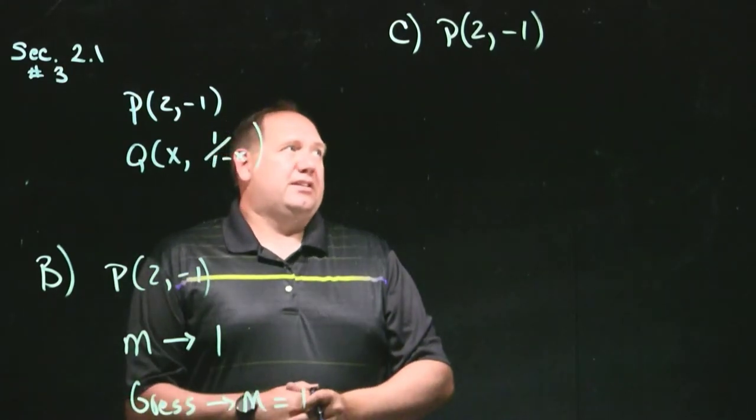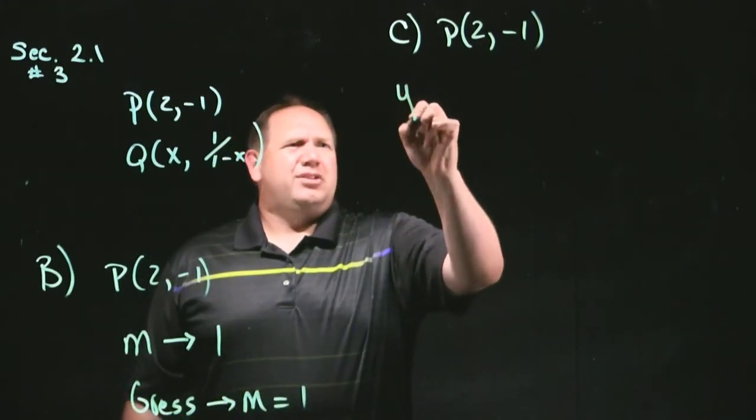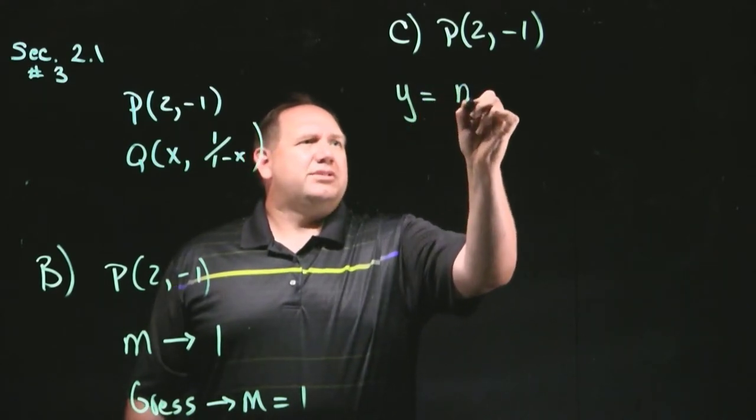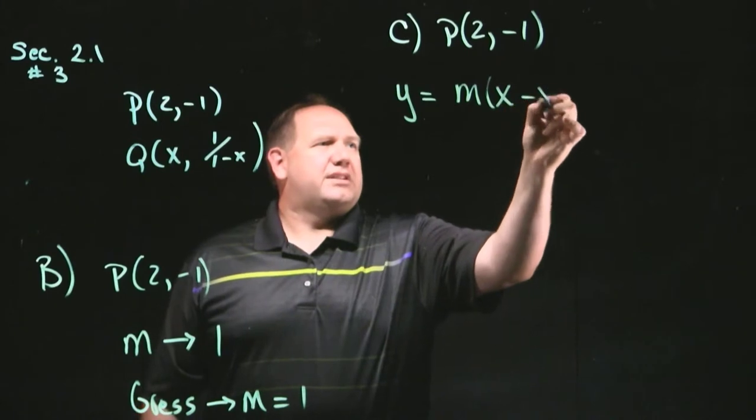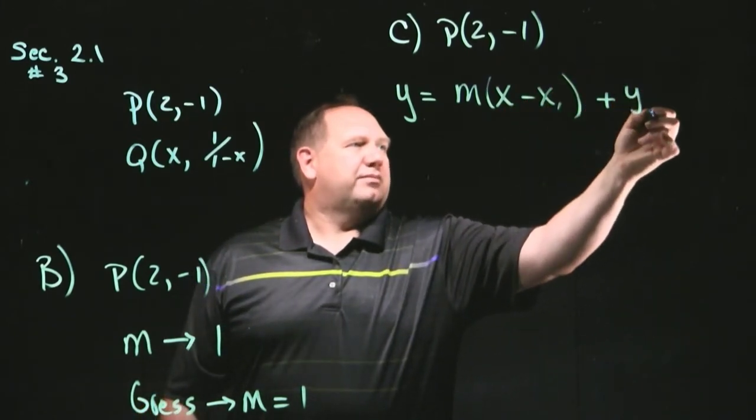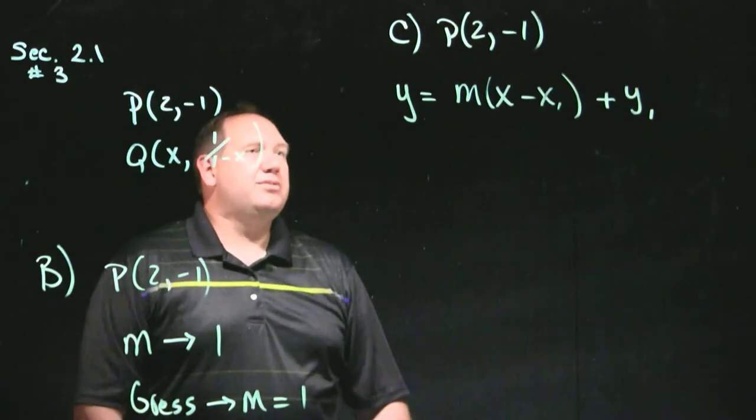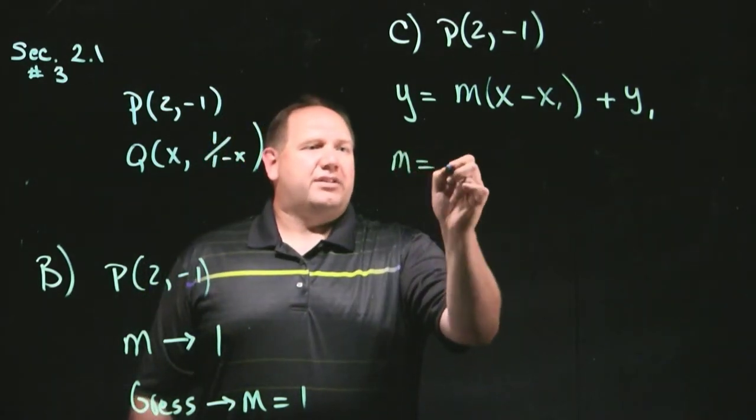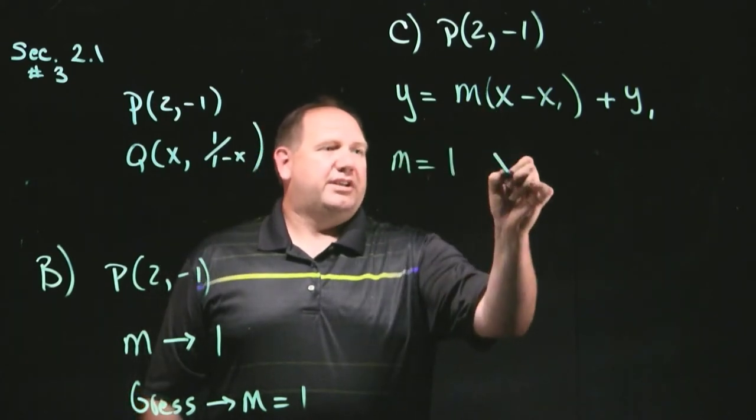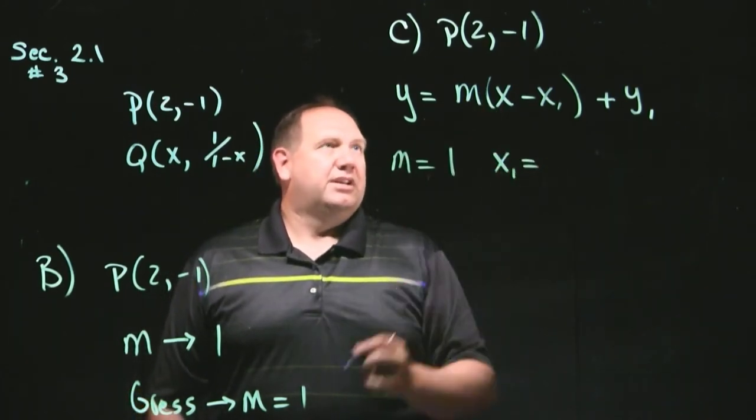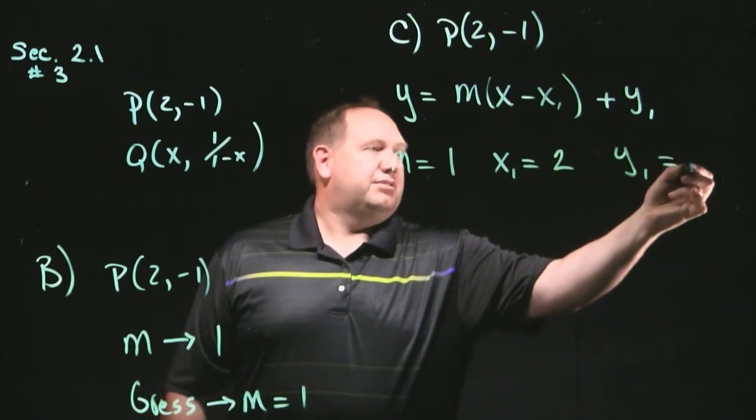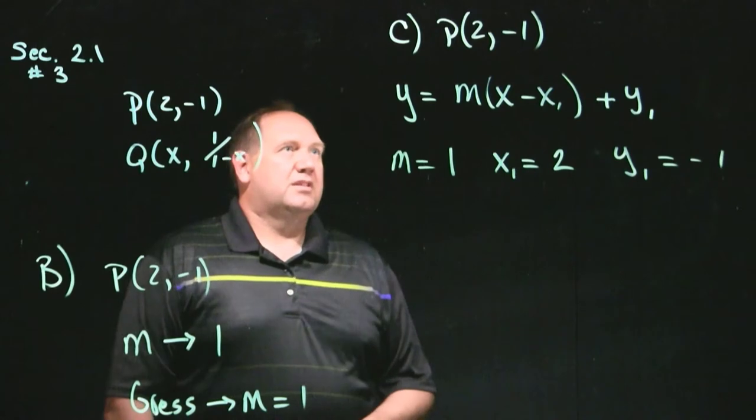Well, we have lots of ways to finding the equation of the line. I'm going to use y equals m times x minus x1 plus y1. That's the one I'm going to use. And so, we have m, that's our guess, is equal to 1. And we have a point. Of course, we have x1 is equal to 2, and y1 is equal to minus 1.